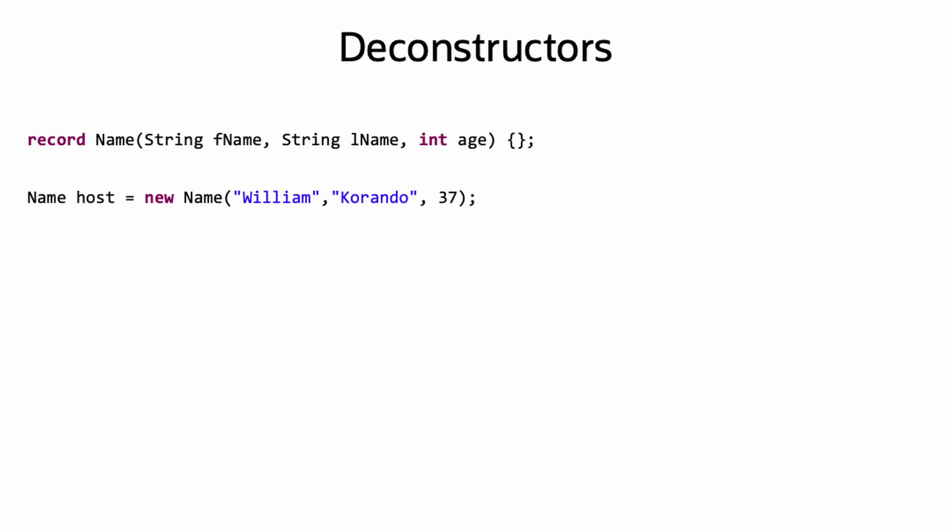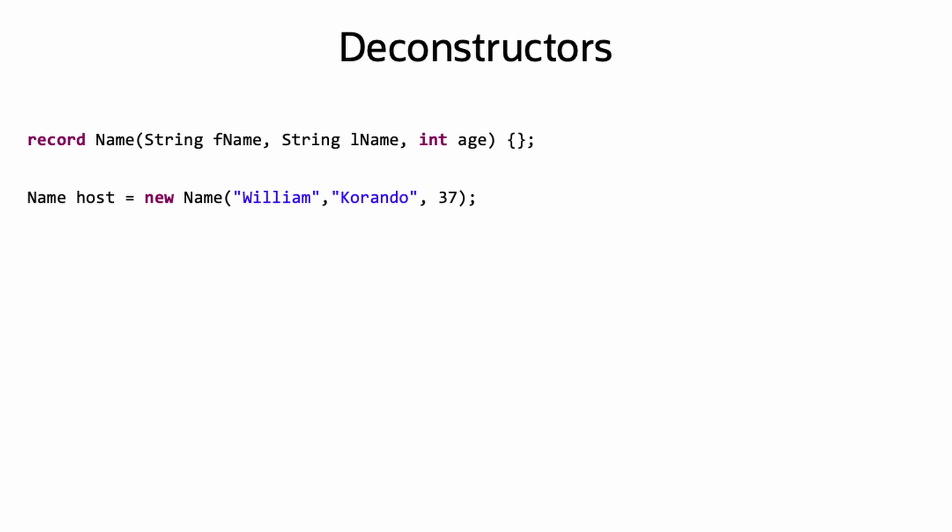Deconstructors are the inverse of a constructor. Where constructors are about creating a new object and adding data to it, a deconstructor is about extracting data from an object, like in this example.